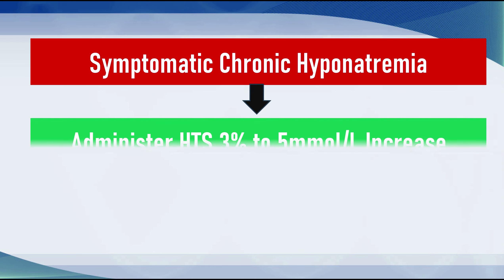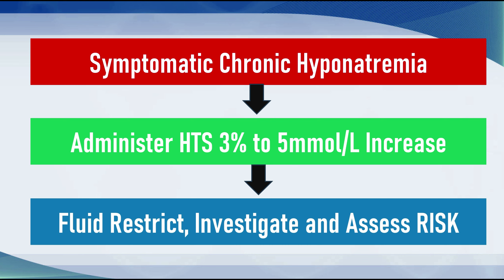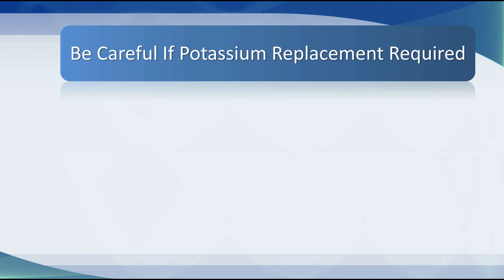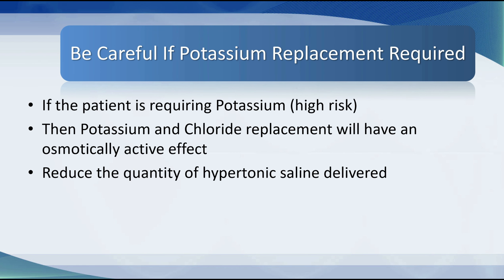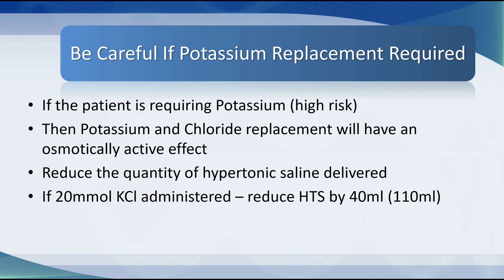The primary intervention in the management of symptomatic chronic hyponatremia is to administer hypertonic saline in sufficient quantity to increase the plasma sodium by 5 millimoles per litre. Once achieved, fluid restrict the patient, investigate blood and urine, and assess the risk. It's essential to remember that an osmol is an osmol — if you're giving potassium replacement for hypokalemia, such as potassium chloride or potassium phosphate, those particles all count towards plasma osmolality, and the quantity of hypertonic saline delivered must be decreased.